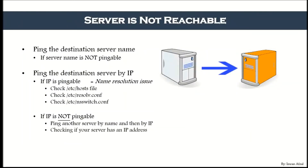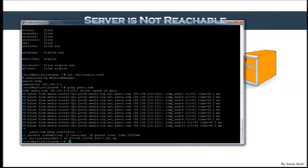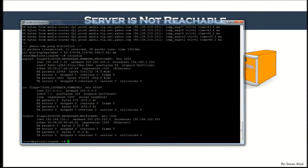If you cannot ping another server either, then check if your own server has an IP address. Run the command 'ifconfig' — this gives you the IP address of your own computer. If you have an IP address and can get onto the network, that is confirmed.